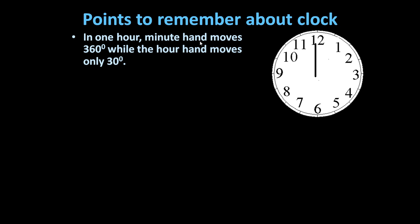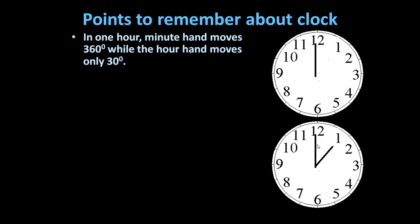Now in one hour, the minute hand moves 360 degrees while the hour hand moves only 30 degrees. If we see the clock after one hour, this will be the position of the hour hand and minute hand. The larger hand is known as the minute hand, and the shorter hand is known as the hour hand.